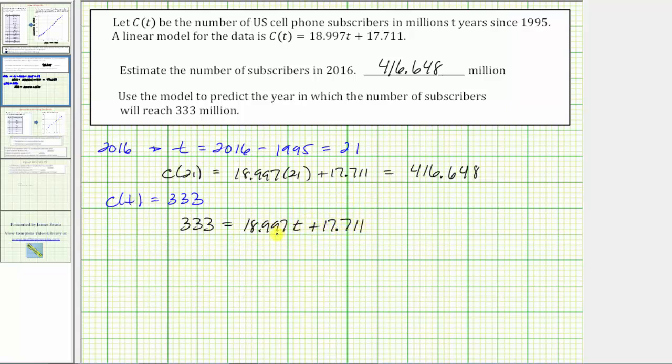We'll solve this equation for t, and that will give us the number of years since 1995, and then from there we'll determine what year that would be. To solve for t, we first would subtract 17.711 from both sides.